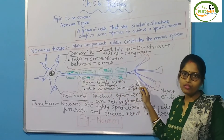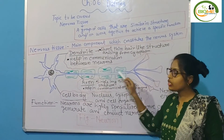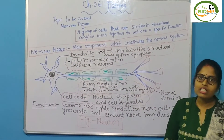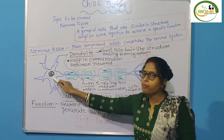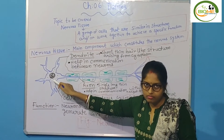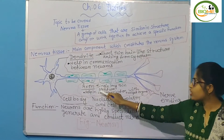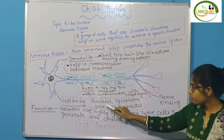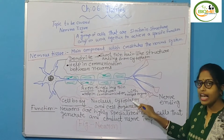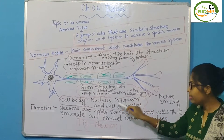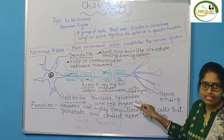This is a figure of a neuron, and this neuron consists of a cell body. This cell body consists of a nucleus, cytoplasm, and cell organelles.